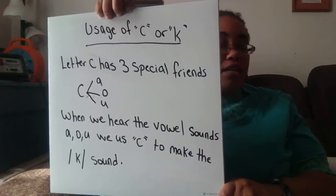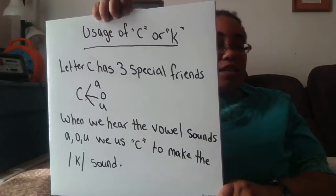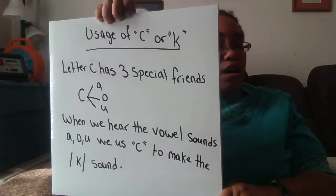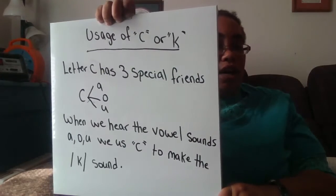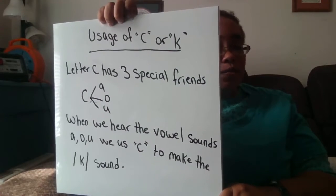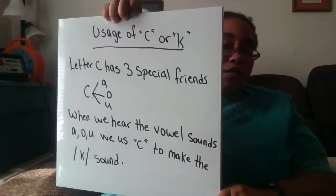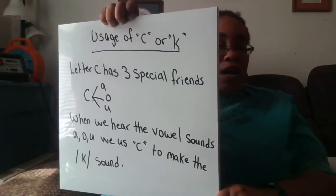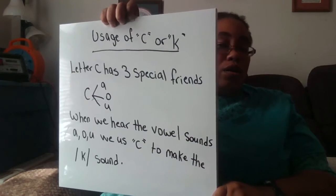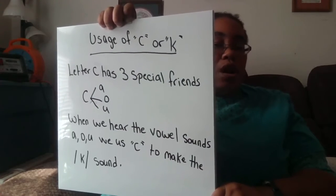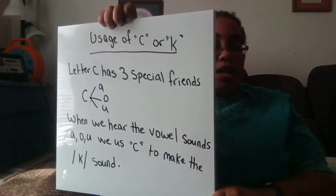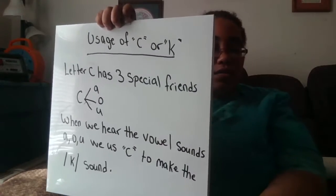The letter C has three special friends: A, O, and U. C likes to partner with these vowels. So when we hear the vowel sounds A, O, or U, we use C to make the 'kuh' sound.